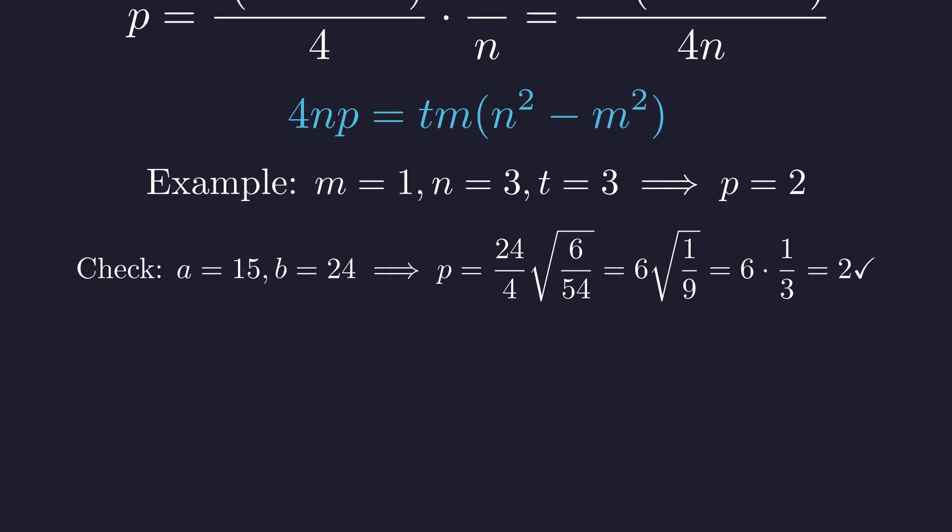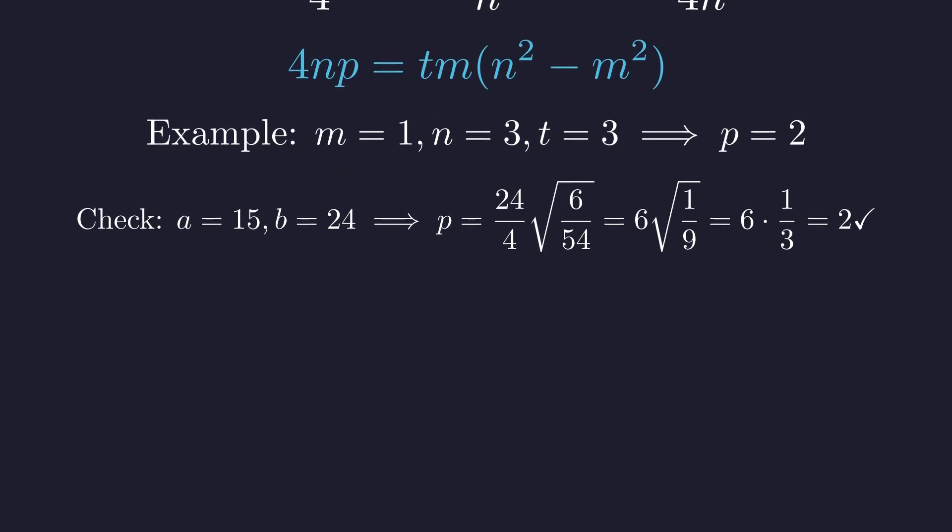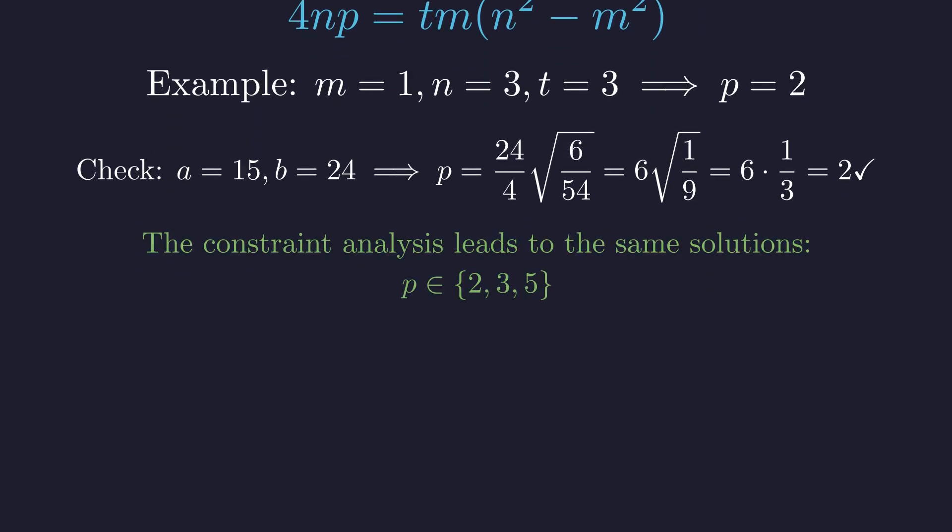With a equals 15 and b equals 24, we get p equals 2 exactly. This confirms our parameterization works beautifully. When you work through all the Diophantine constraints systematically, this alternative approach yields exactly the same three prime solutions we found before. It's a beautiful example of how different mathematical perspectives can illuminate the same underlying structure.